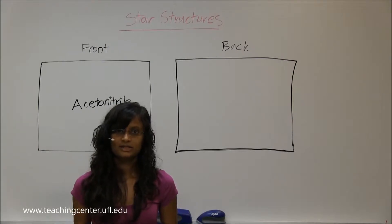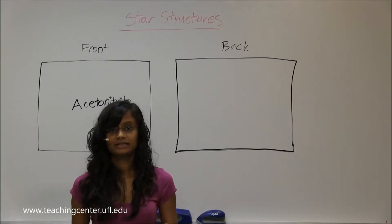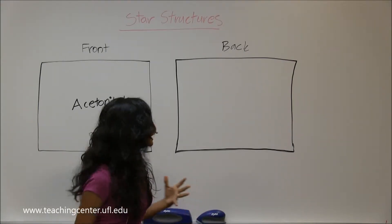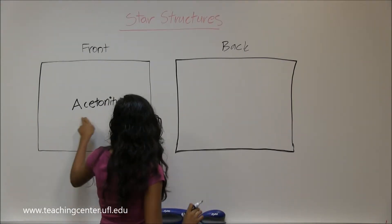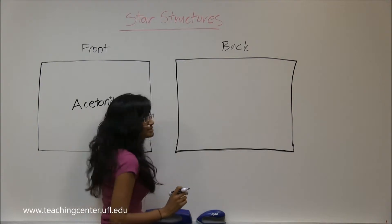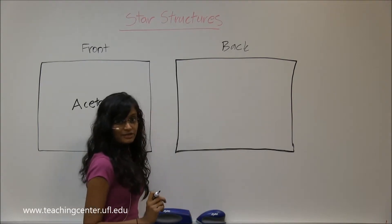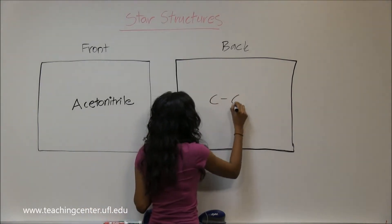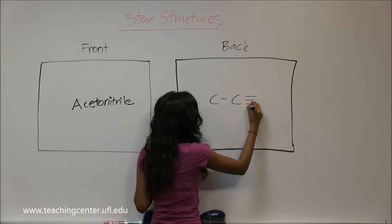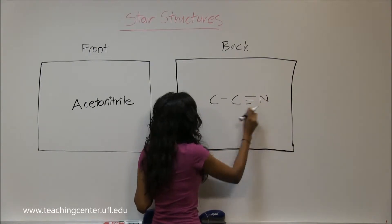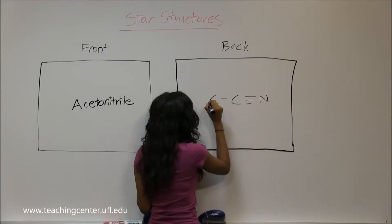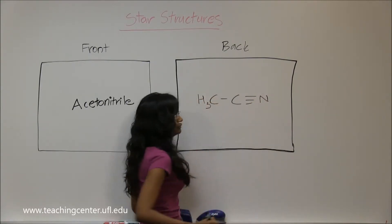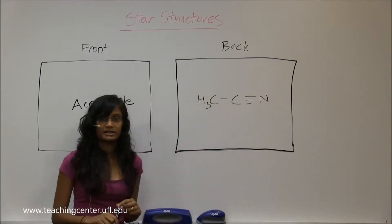Acetonitrile is another aprotic solvent. 'Acet' means two groups, and it has a nitrile on it. So you have two carbons, but the second carbon is a nitrile group. That's what you would write it as.